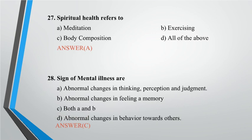Question 28: Signs of mental illness are? A. Abnormal changes in thinking, perception and judgment, B. Abnormal changes in feeling and memory, C. Both A and B, D. Abnormal changes in behavior towards others. Answer: C.